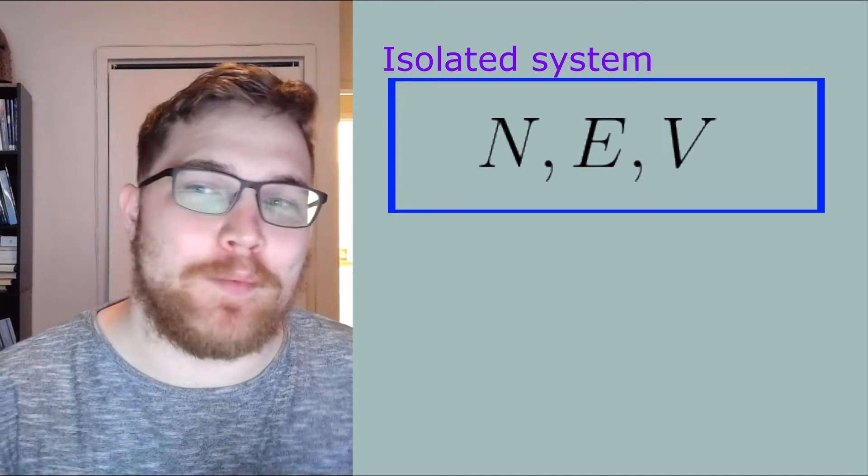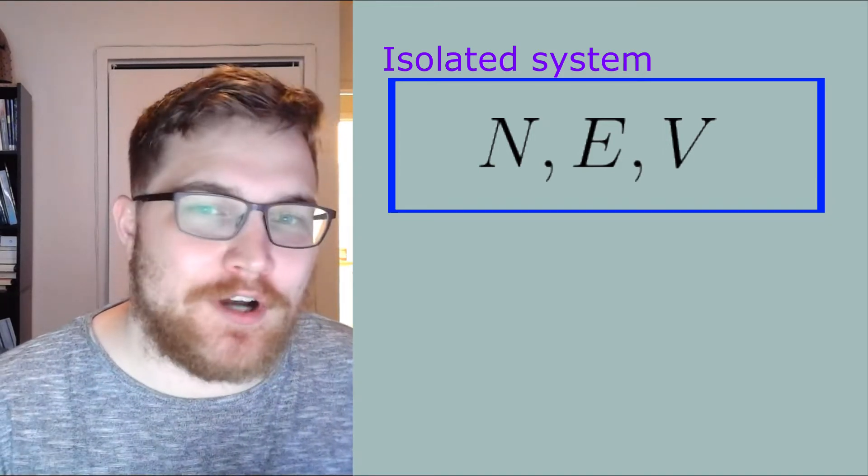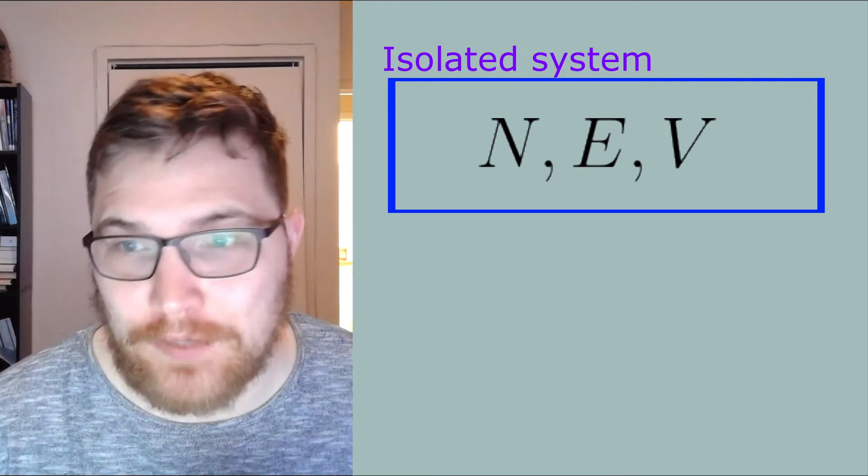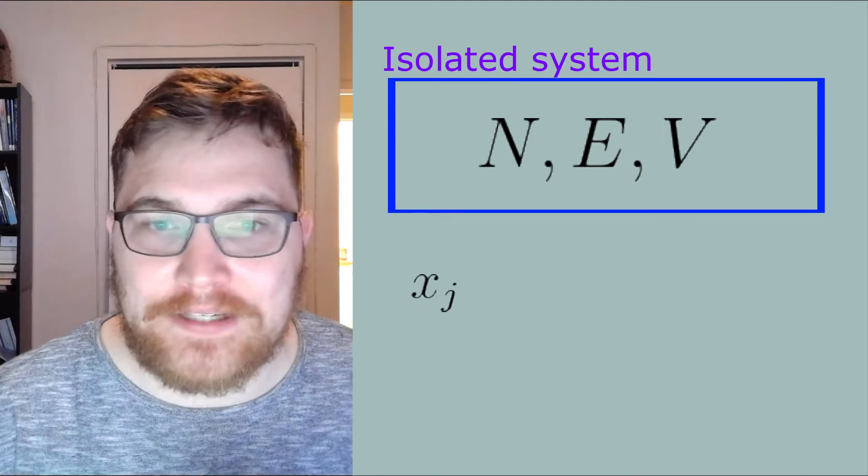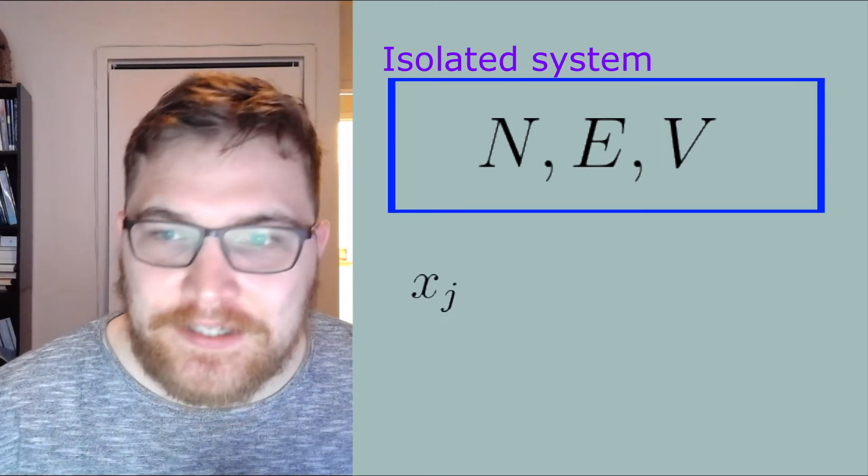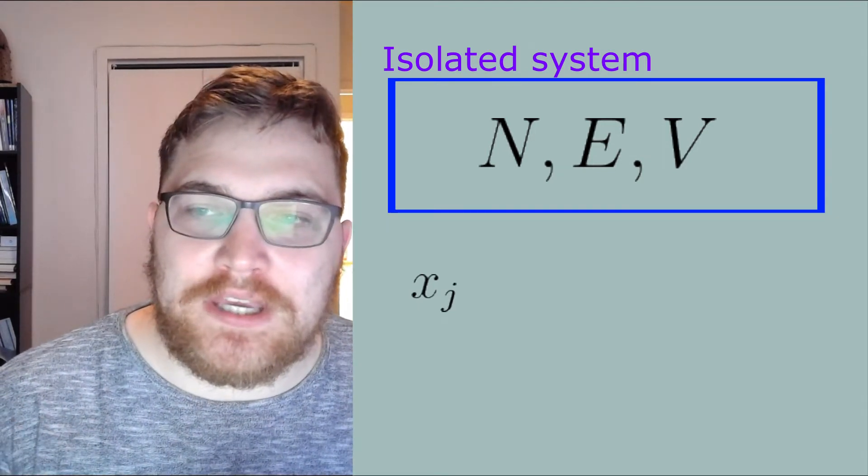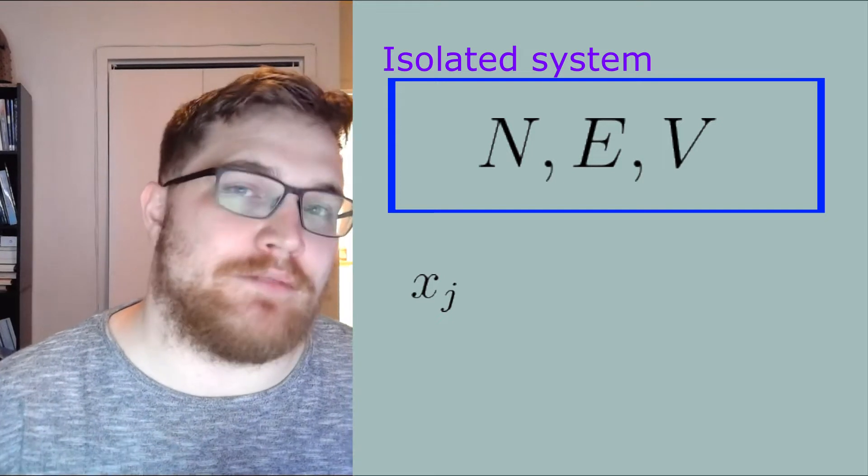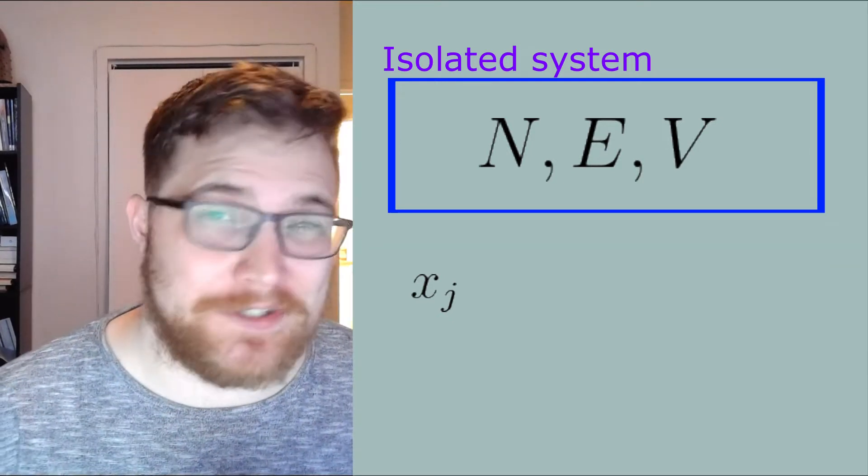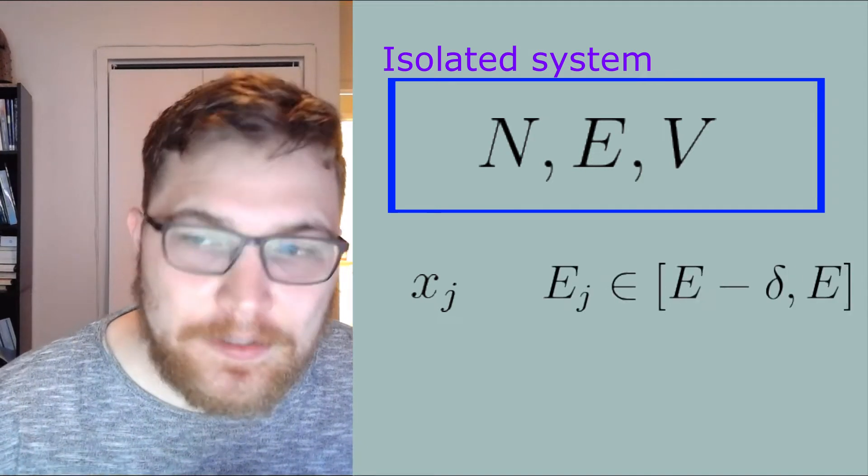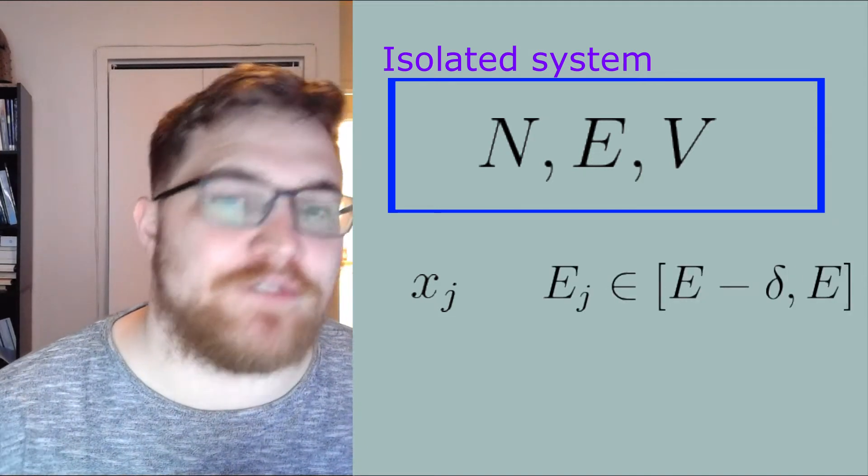So let's label our microstates as usual x1 through xn. In a closed and isolated system we know that the energy is fixed at some constant E, perhaps we know this up to some uncertainty delta. So we say that the microcanonical ensemble is defined by making each microstate that is energetically accessible equally probable.